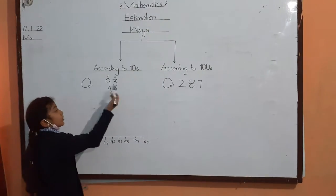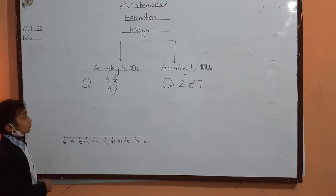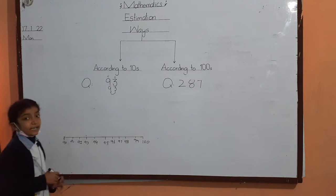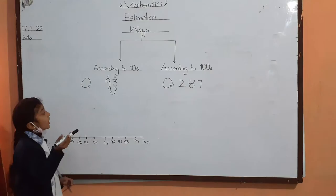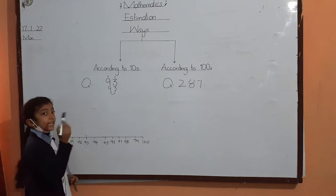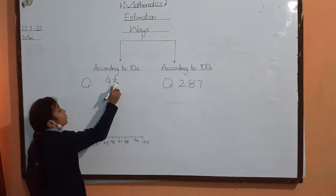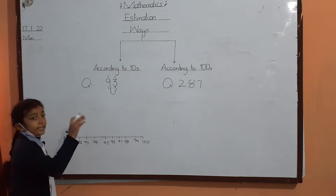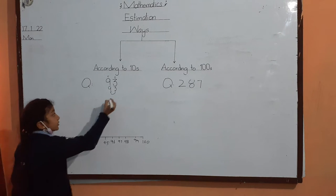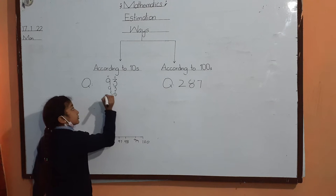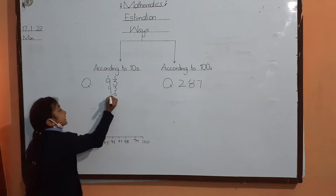If it is less than, we will write it as it is. If it is greater than, we will add one to it. So this 3 is less than 5. So we will write 9 as it is.